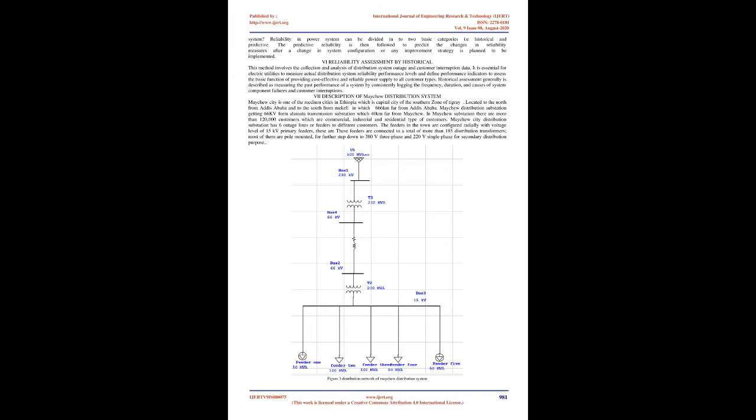In general it has the following advantages: to indicate the influence of power interruption on the economy of customers and the utility; to assess the average duration and frequency of power interruption per year in the system. Availability means the probability of something being energized. It is the very basic aspect of reliability and is typically measured in percent or per unit. The opposite of availability is unavailability. Availability means probability of being energized; unavailability means probability of not being energized.